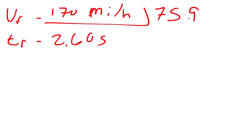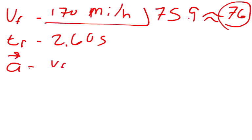It's really 75.99, so close to 76 that we might as well just call it 76 meters per second. Now we can find the acceleration because acceleration is v final minus v initial divided by time.